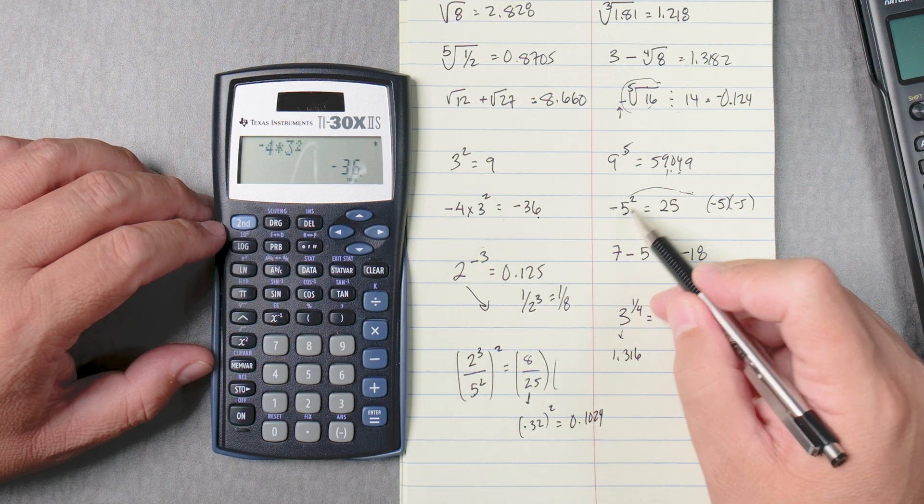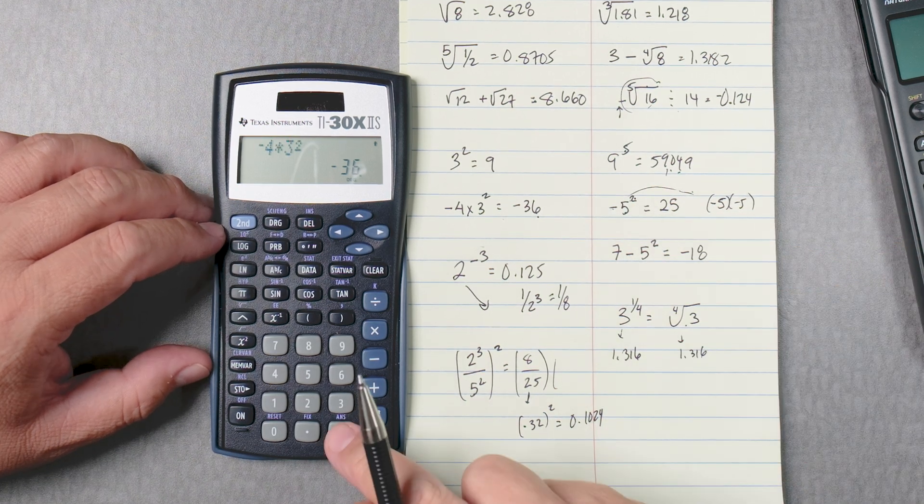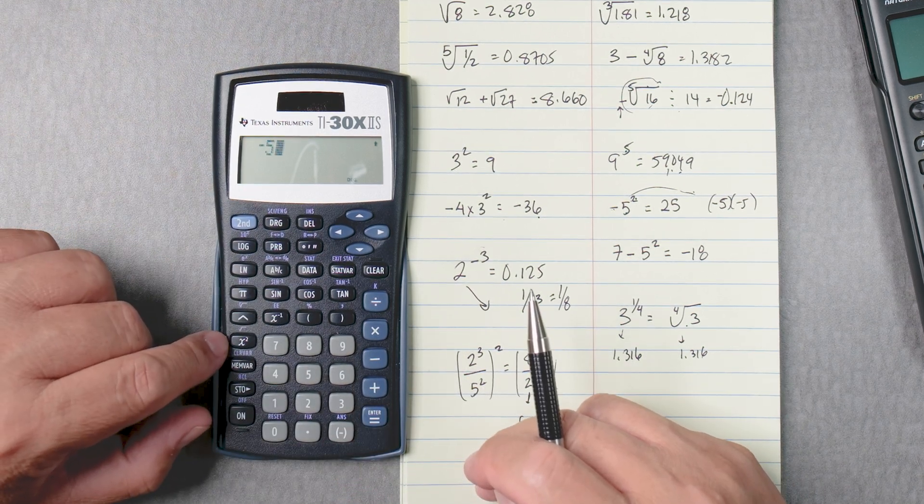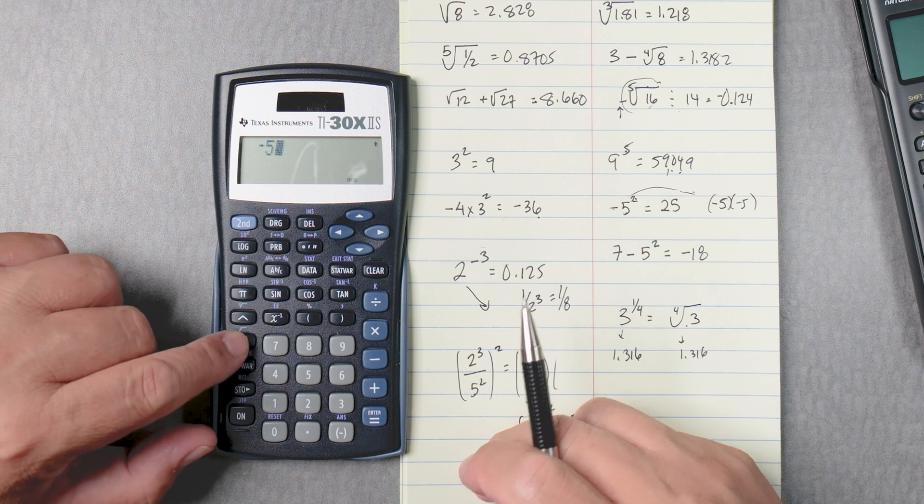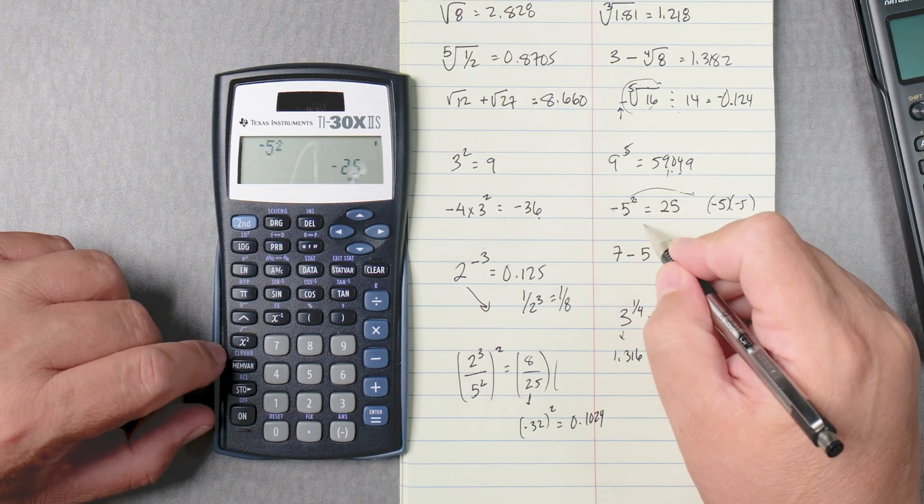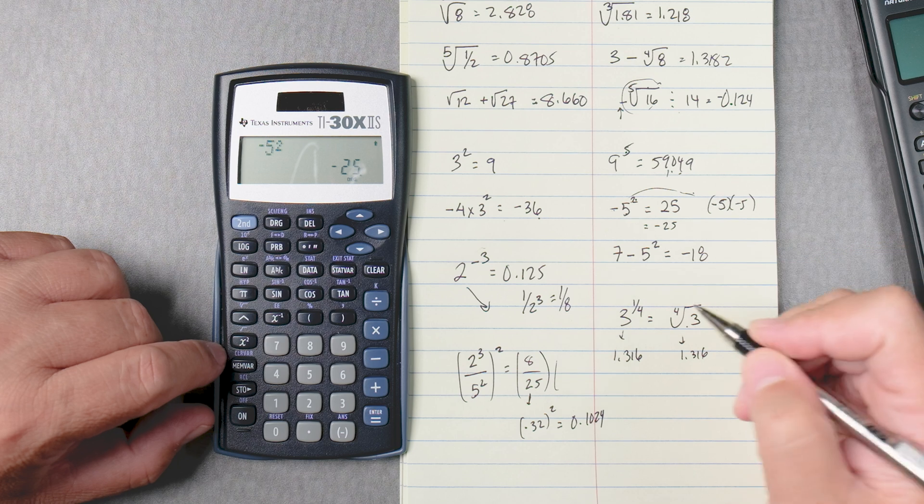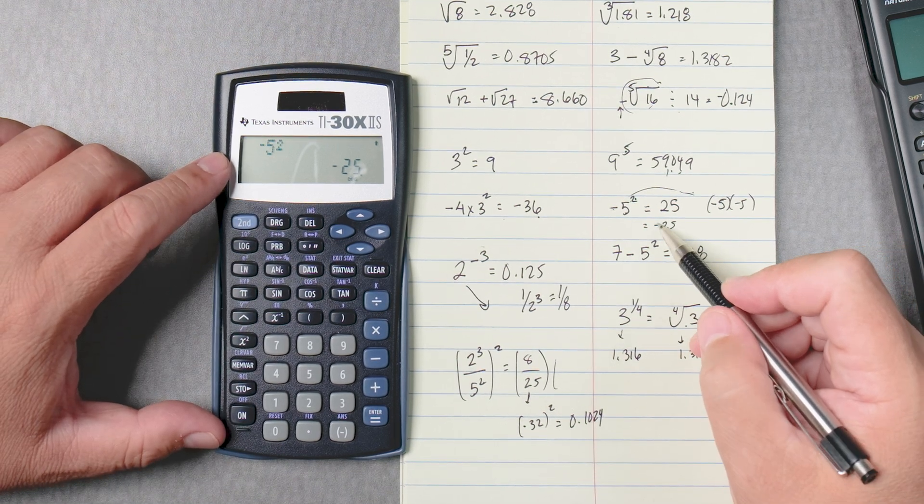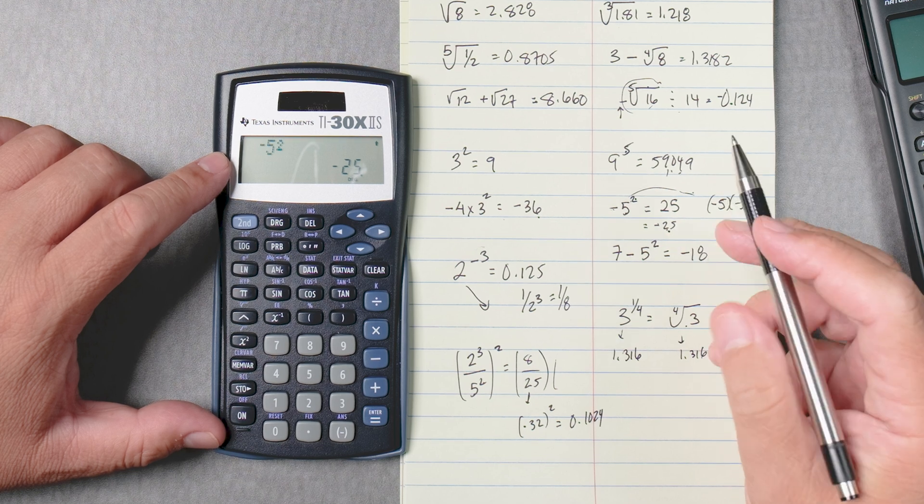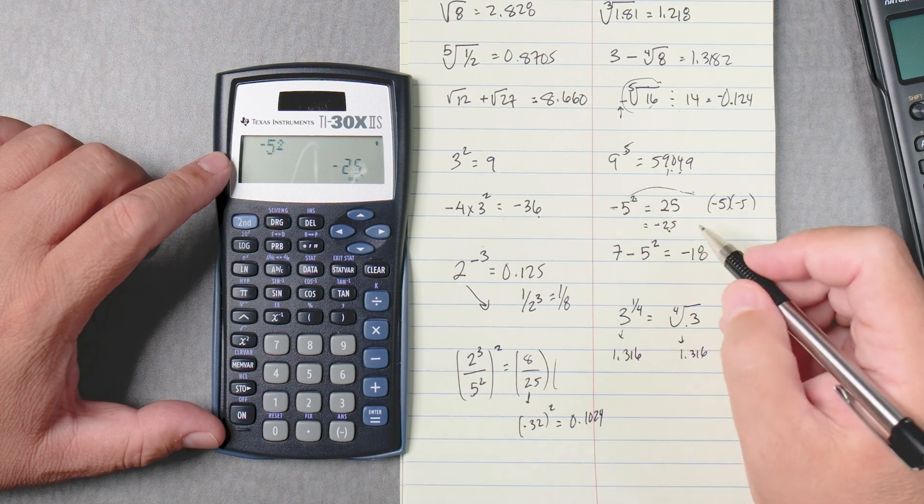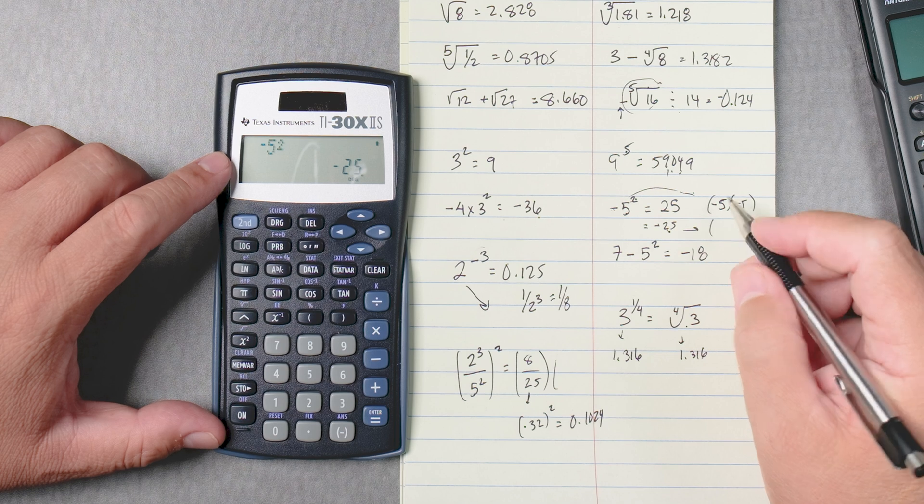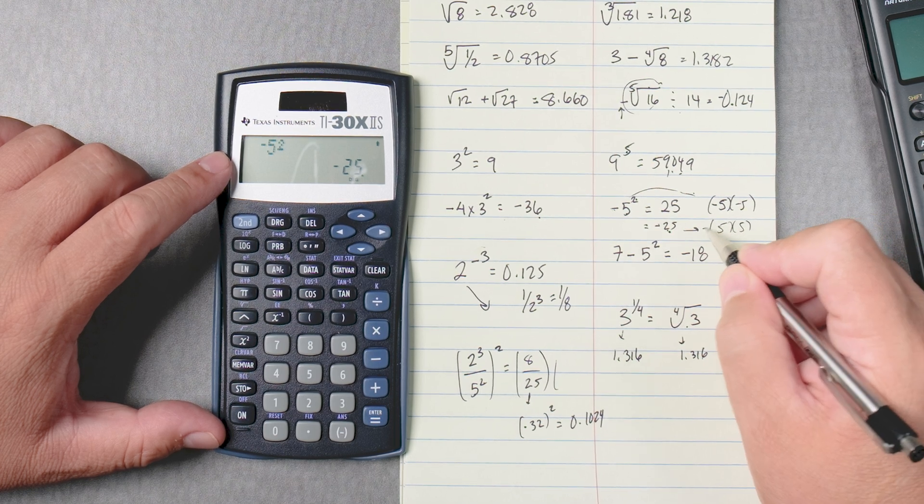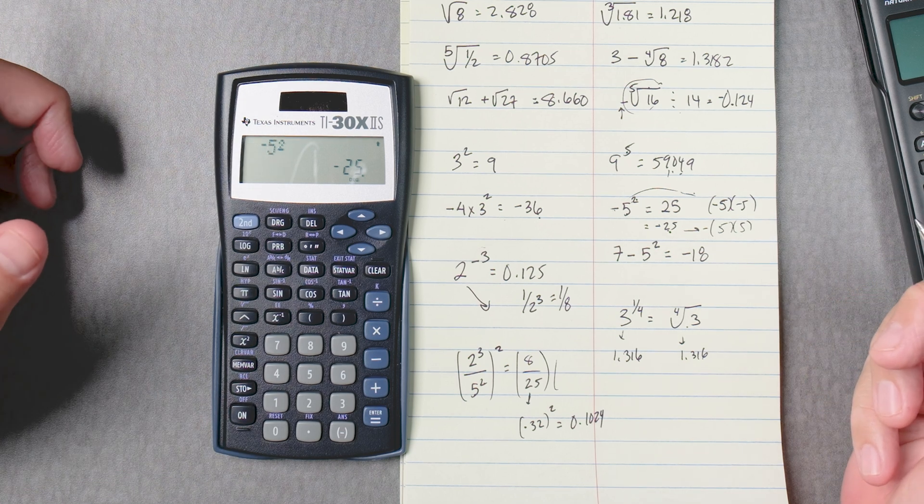This one's negative 5 squared. So we would put negative 5, and then we would use squared, which is right here. Equals, gives you an answer of negative 25. Depending on the calculator that you have, this is an algebraic calculator. It's going to give you negative 25. So in the calculator, in this calculator, it's thinking that the answer is 5 times 5, and then you put the negative afterwards. Why is that the case?